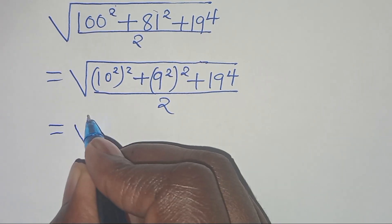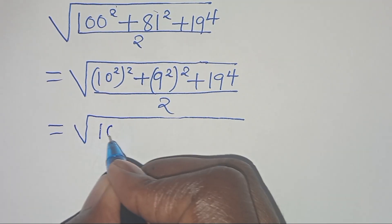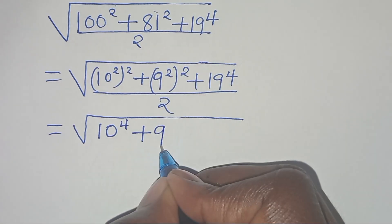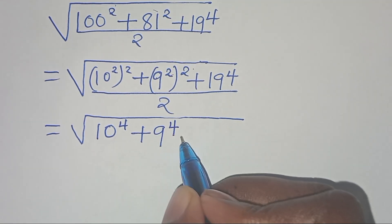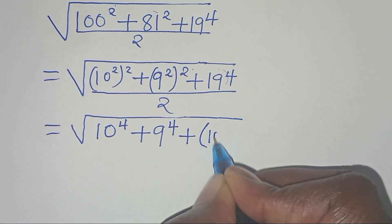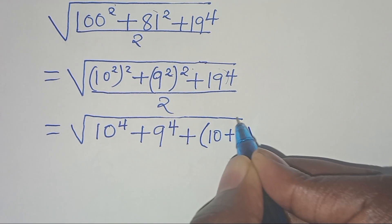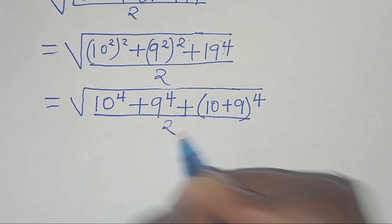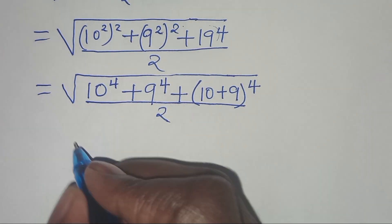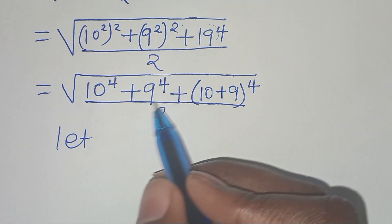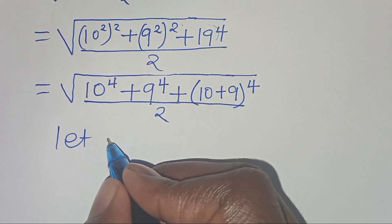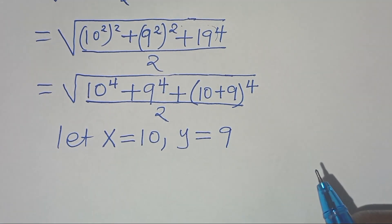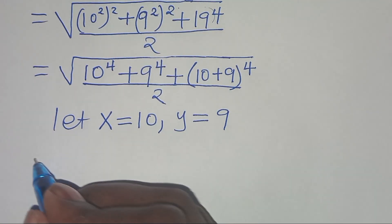This is the same thing as the square root of 10 raised to power 4, plus 9 raised to power 4, then plus we can express 19 as 10 plus 9, raised to power 4, all divided by 2. The next step is that we can express 10 and 9 in the form of letters, so let x be equal to 10 and let y be equal to 9.